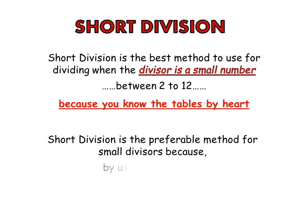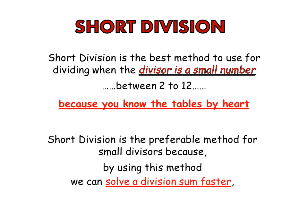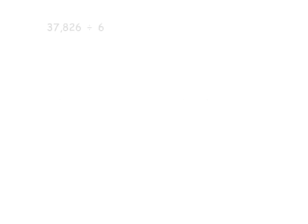Short division is the preferable method for small divisors because by using this method we can solve a division sum faster than while using long division to solve the same sum. Let's do an example.